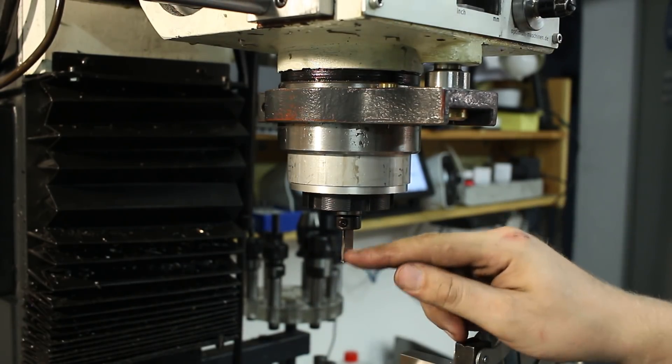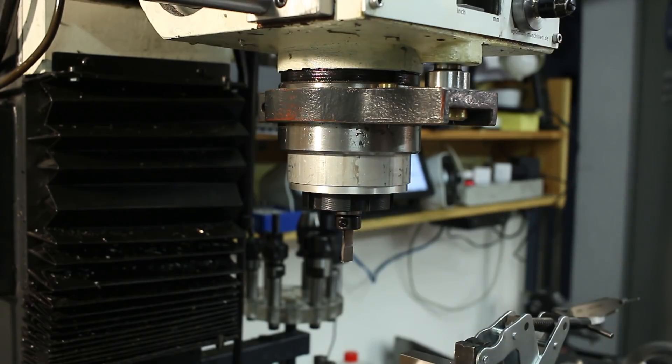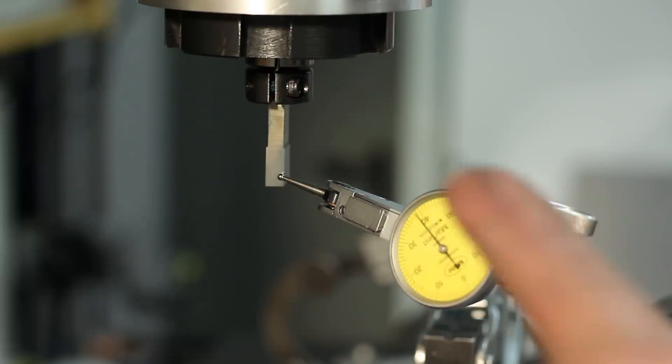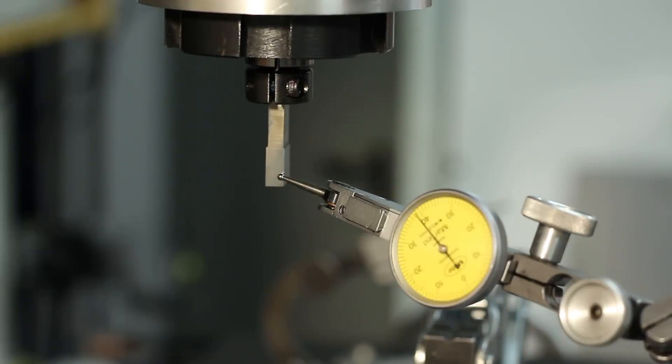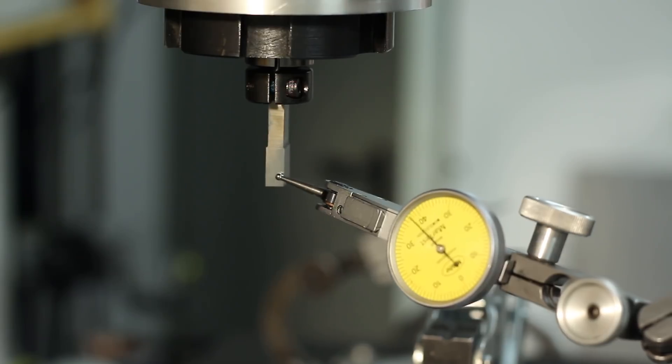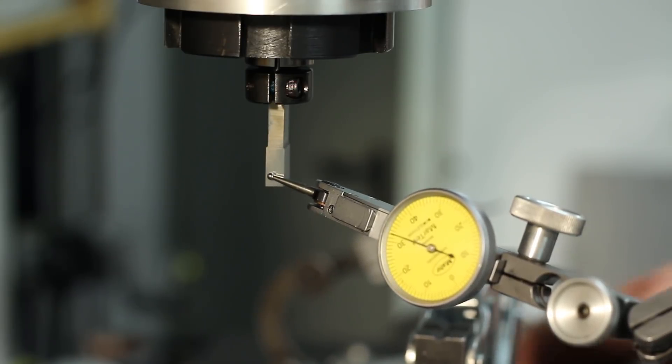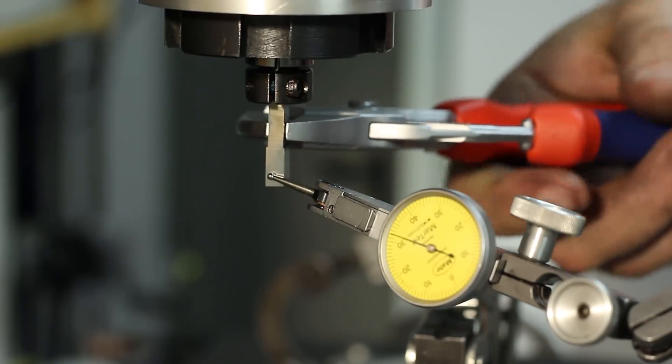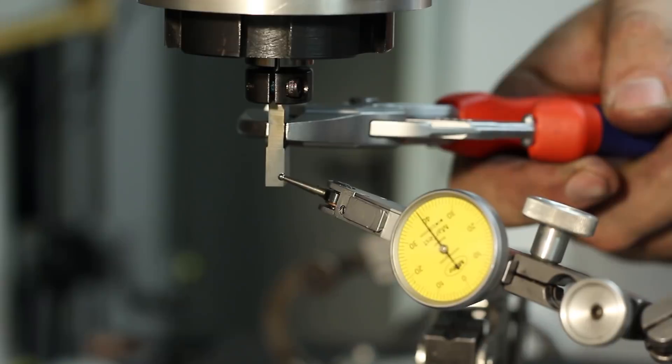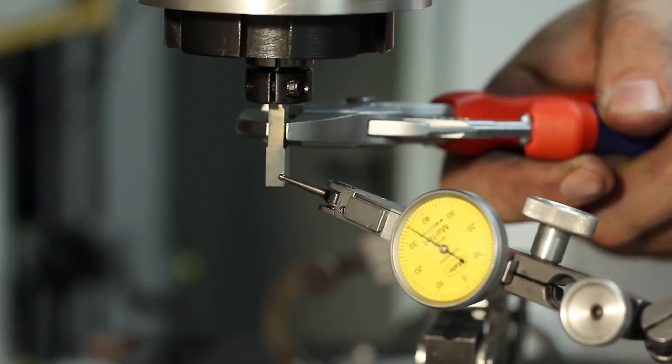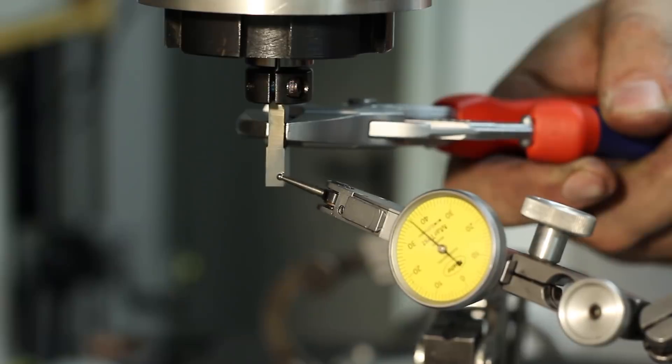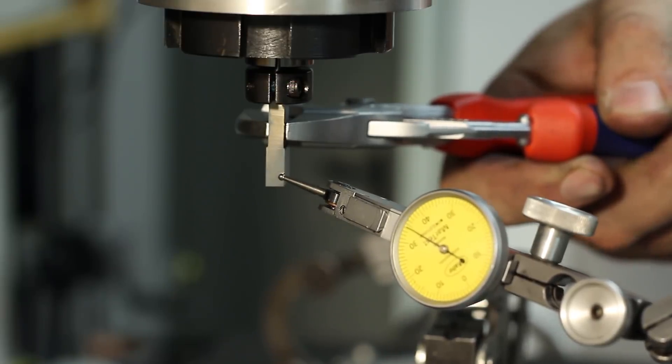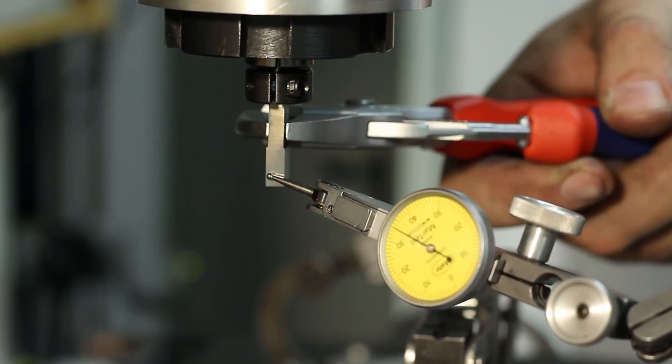Now we need to orient the tool so it's showing in one direction. To indicate the tool in, we're using a dial test indicator setting on the table of the mill and we're just moving across the face of the tool using a pair of pliers to manipulate the tool until we get a relatively low movement in the needle.